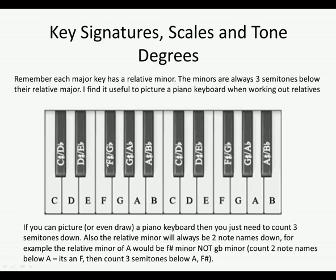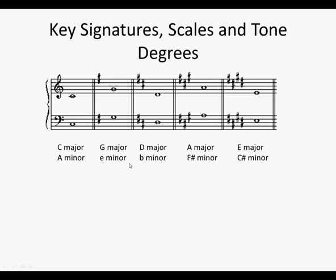So A major's relative minor is F sharp minor. Let's do another example: D major — go down two note names, one, two, we get to B, then three semitones, one, two, three — D major's relative minor is B natural minor. One more: B major — go down two note names to G, then down three semitones, so B major's relative minor is G sharp minor.